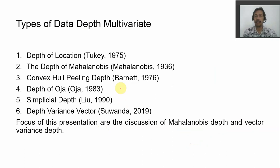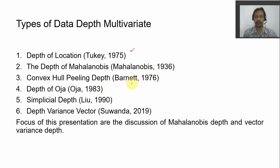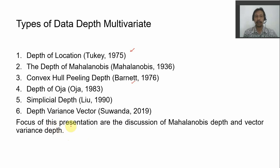We can further develop the concept of data depth for multivariate cases. There are many researchers who studied types of data depth for multivariate cases: the depth of location proposed by Tukey, the Mahalanobis depth, the convex hull peeling depth introduced by Barnet, the Oja depth, the simplicial depth defined by Liu, and lastly the depth variant vector introduced by our team. In this presentation we discuss the comparison between Mahalanobis depth and vector variance depth.